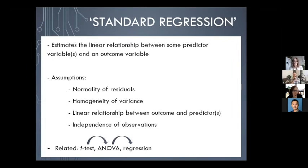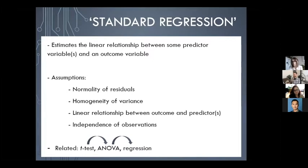We'll briefly recap standard linear regression. In any regression, we have two key components: a probability distribution — the population distribution we assume we're sampling from — and a link function, which links the predictors to the parameters of that distribution. For the standard linear model, the probability distribution is the normal or Gaussian distribution with parameters mean and standard deviation. The link function, which we don't usually talk about, is called the identity function, and it maps predictors onto the mean.